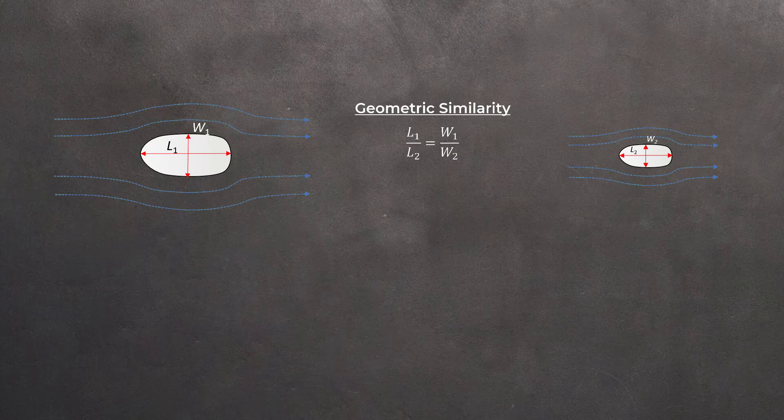If they are geometrically similar, then it is required that the ratio of corresponding lengths of the two objects, that is L1 over L2, W1 over W2, and so on, are the same.